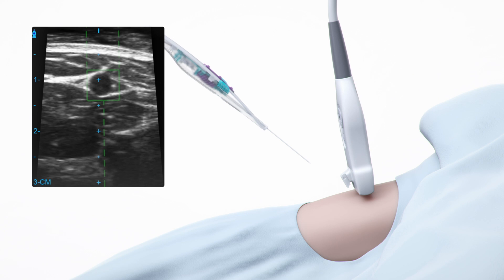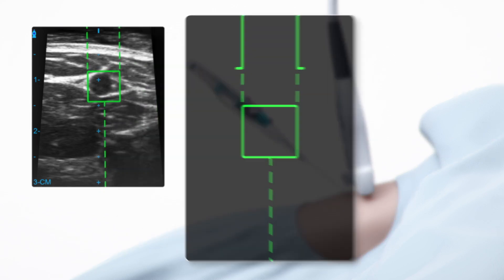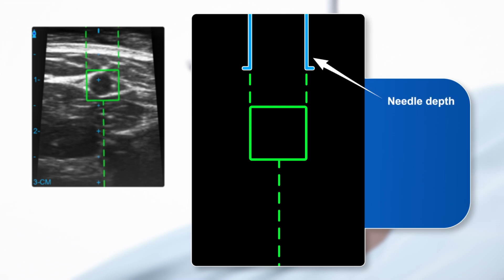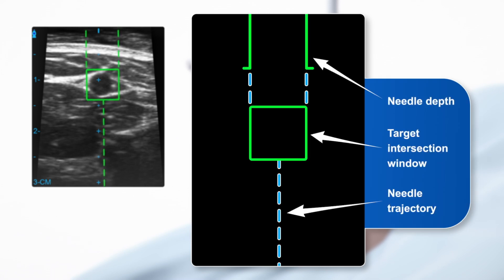Once tracking is up and running, approach at a typical insertion angle, about 45 degrees. You should seek guides for your needle depth, the target intersection window, and the needle trajectory.